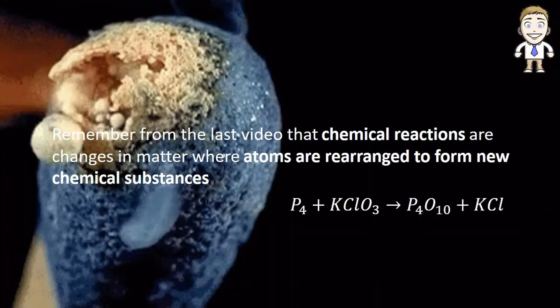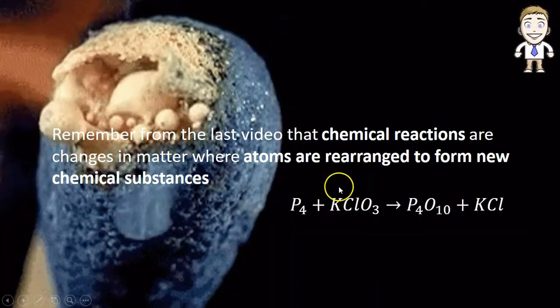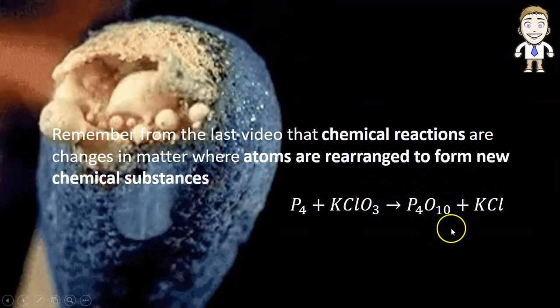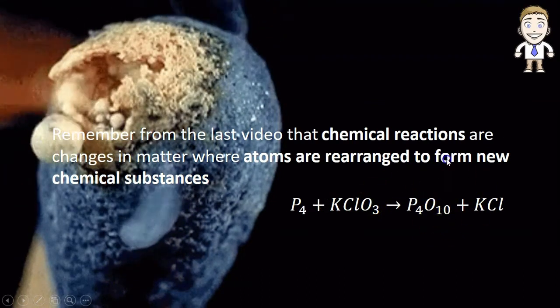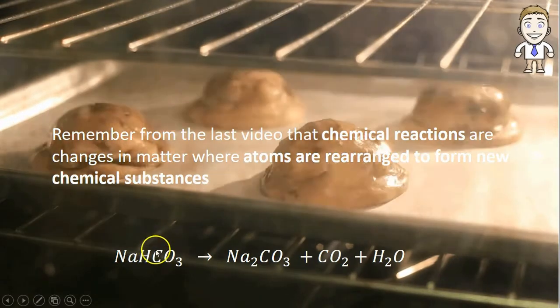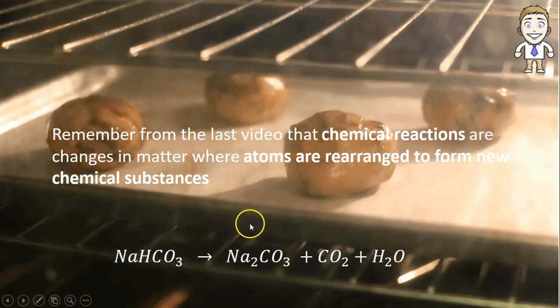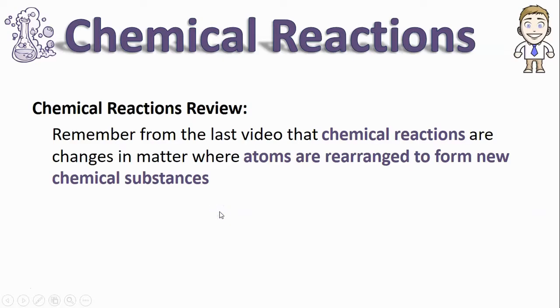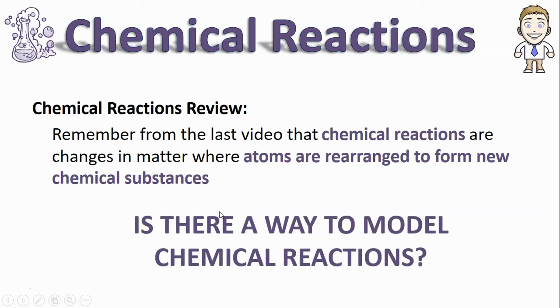Like the phosphorus, potassium, chlorine, and oxygen atoms in the tip of a burning match that rearrange to form these two new compounds, or the sodium, hydrogen, carbon, and oxygen atoms that rearrange to form these three new substances while you're baking cookies. The question for this video is: is there a way to model these chemical reactions that is easier than drawing out every individual atom?